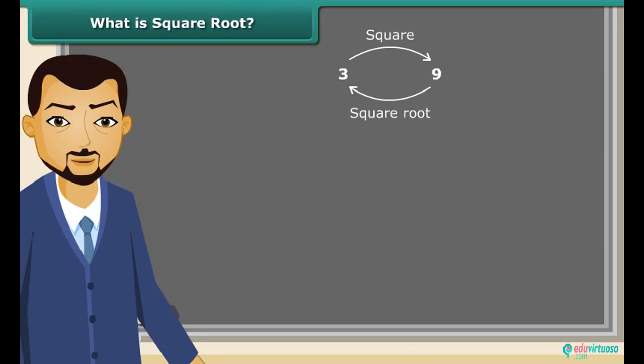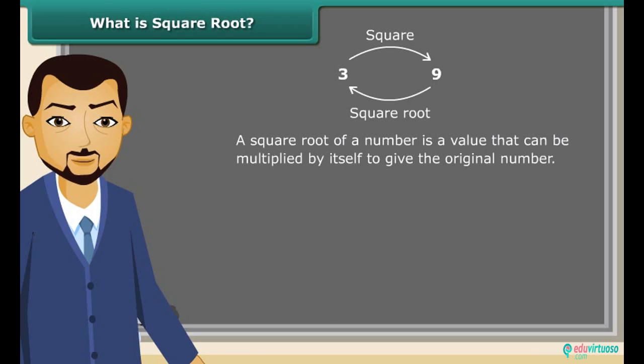Square root is an inverse operation of squaring. It is a value that can be multiplied by itself to give the original number. So we can say when 4 is multiplied by 4, we get 16, which means 4 is a square root of 16. A square root is represented by a special symbol. It is called the radical. We can use it like this: Square root of 25 is 5.